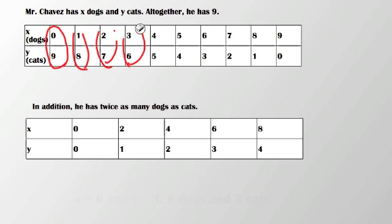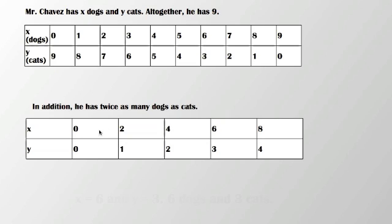That's a pretty large table. The next sentence — in addition, he has twice as many dogs as cats — gives us a second table, again showing x as dogs and y as cats. In this case, if I have twice as many, I'm only dealing with even numbers because we're not talking about partial dogs or partial cats. I'm only going up to eight because once I hit nine, there's that partial cat issue, which doesn't really serve my purpose.